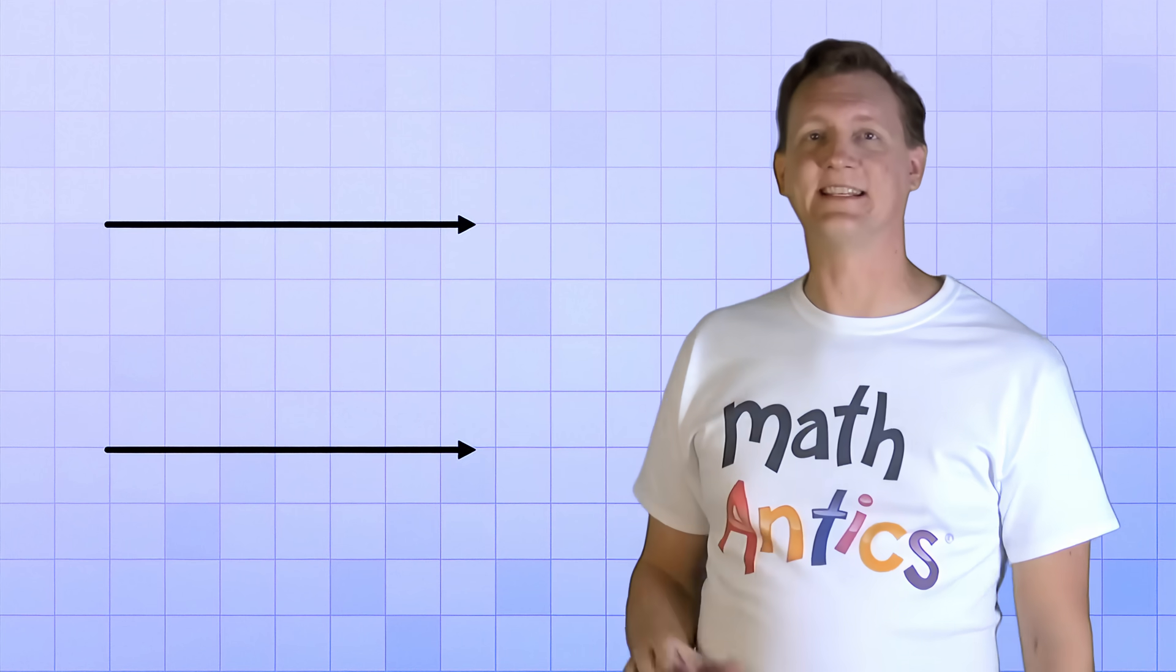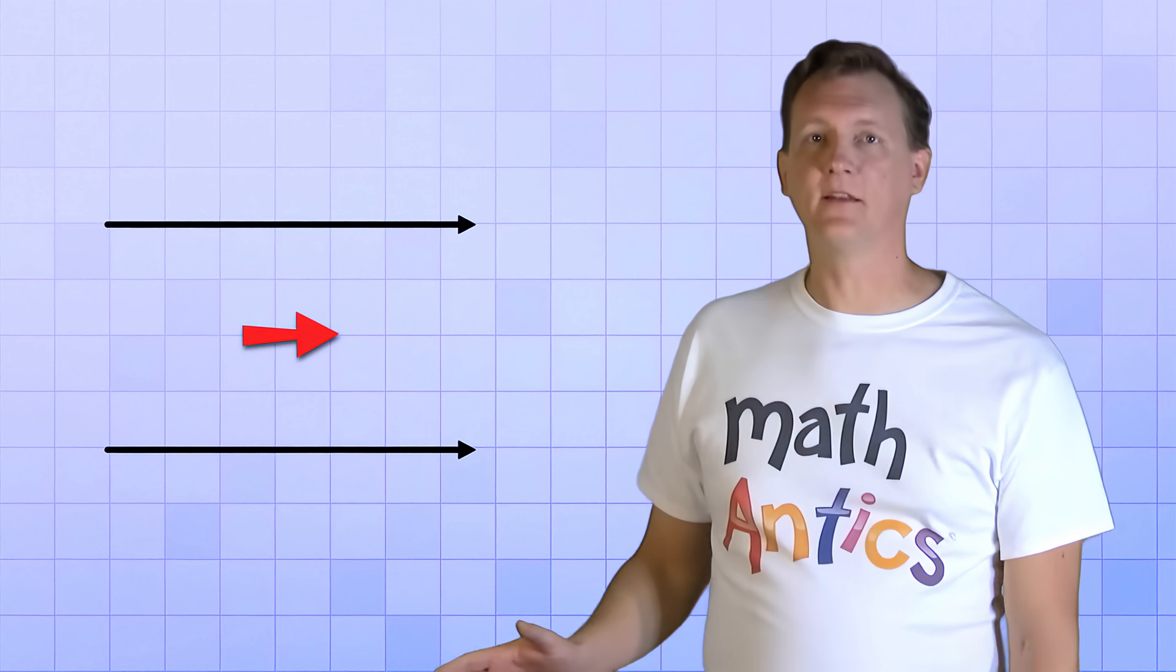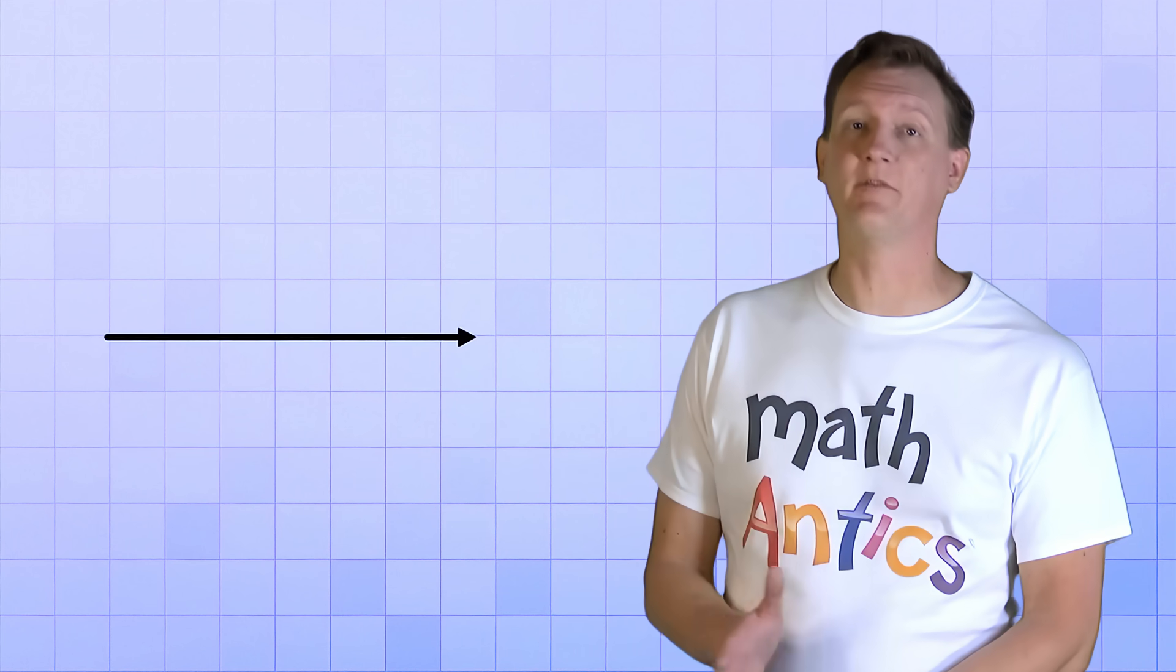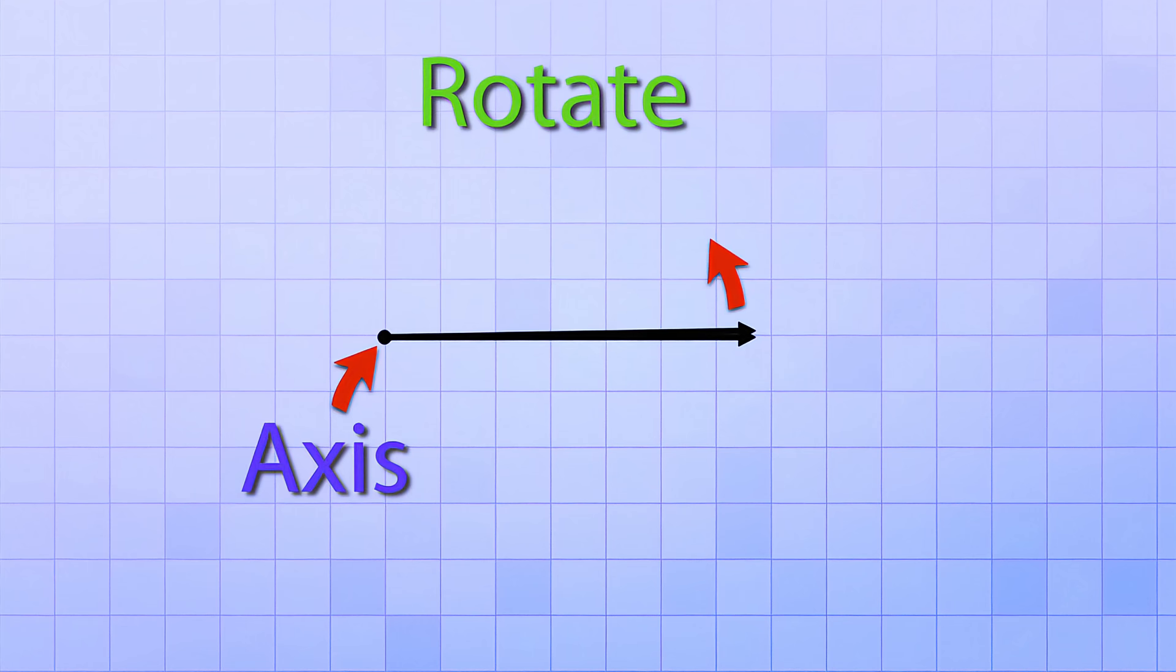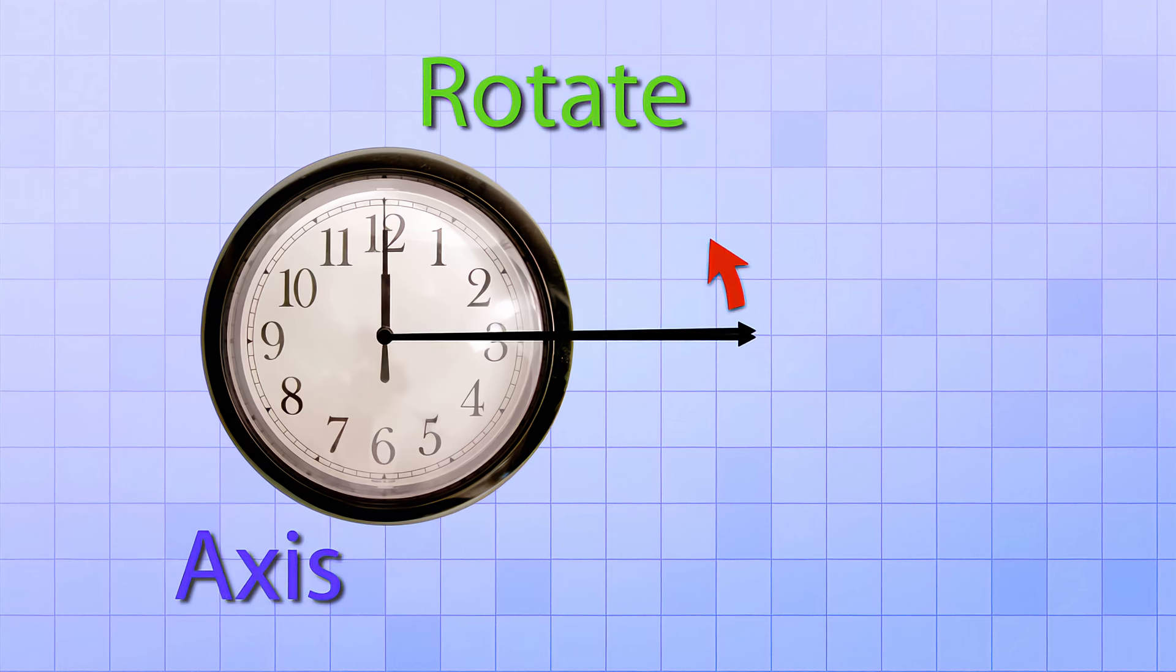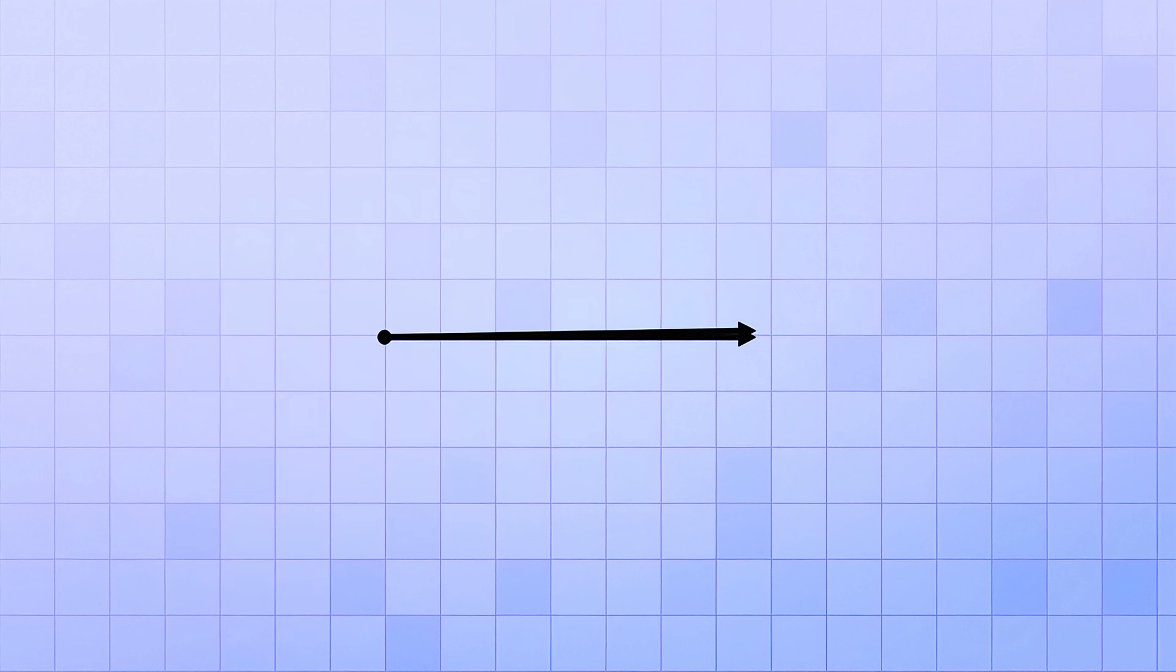To see how we use degrees to measure angles, let's get two rays that point in exactly the same direction. Then, let's put one ray directly on top of the other one so it looks like there's only one ray there, even though there's really two. Now, let's take the ray on top and rotate it just a tiny amount counter-clockwise. This point on the ray will be our axis of rotation. It's just like the point at the center of a clock that stays stationary while the hands rotate around it. Our rays now form an angle that measures 1 degree. And as you can see, 1 degree is a really small angle.